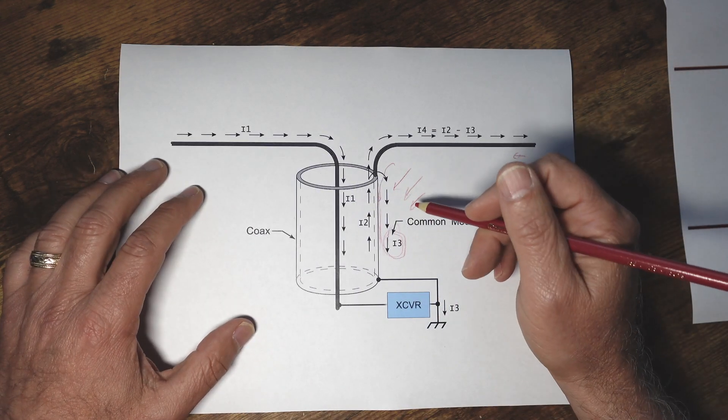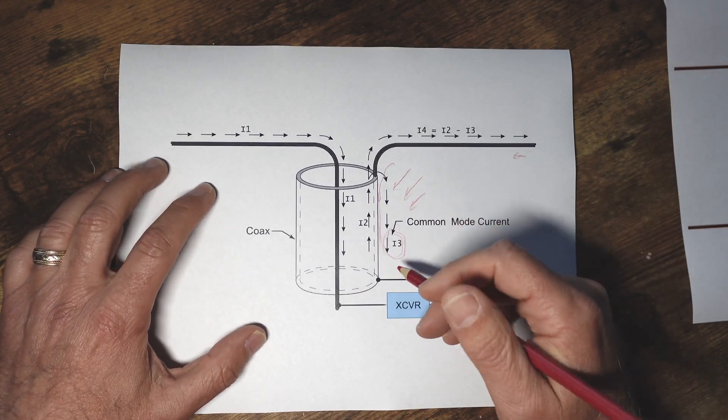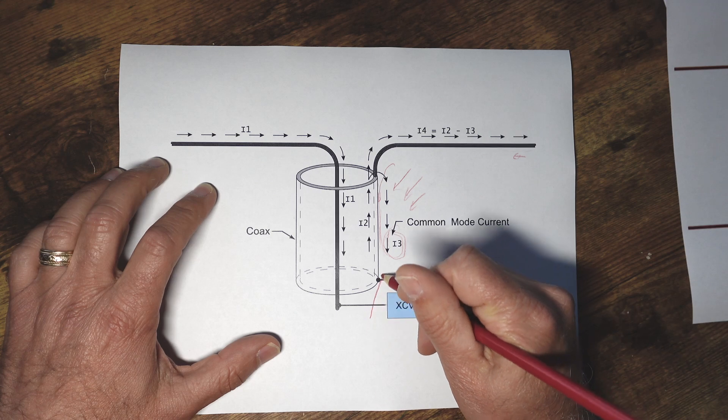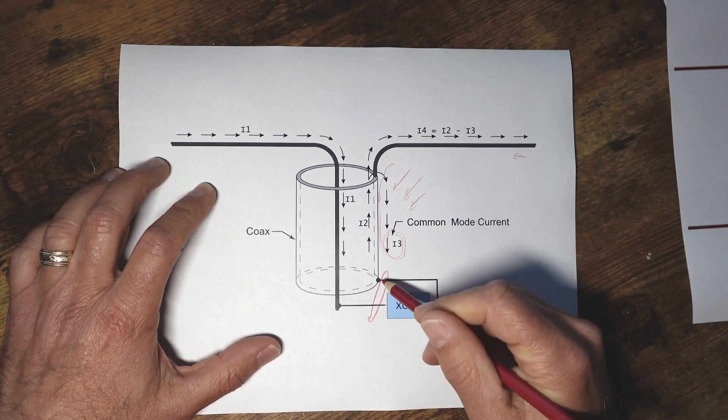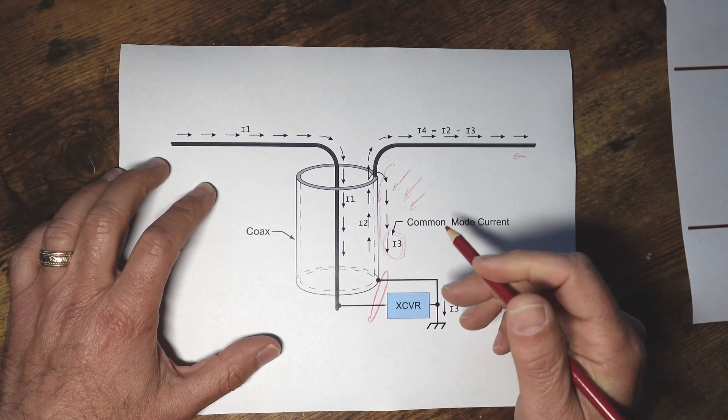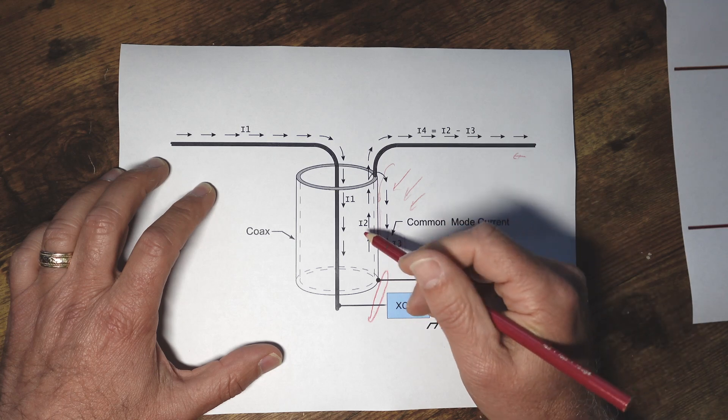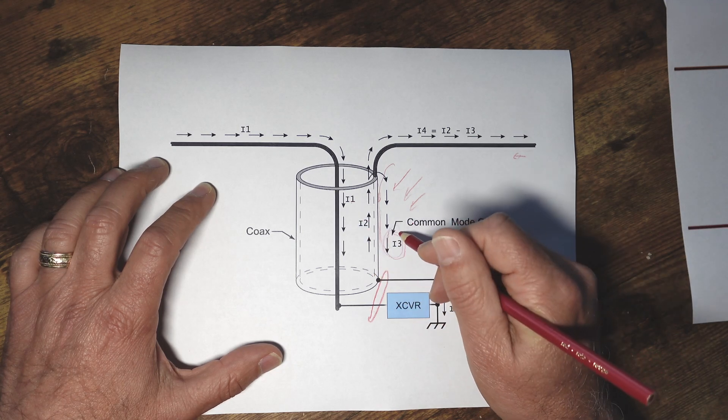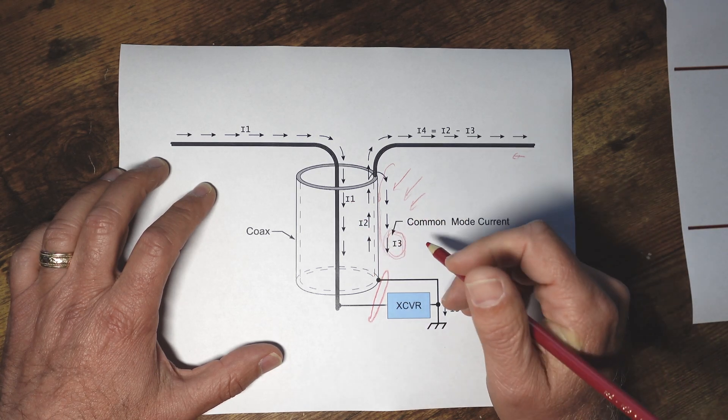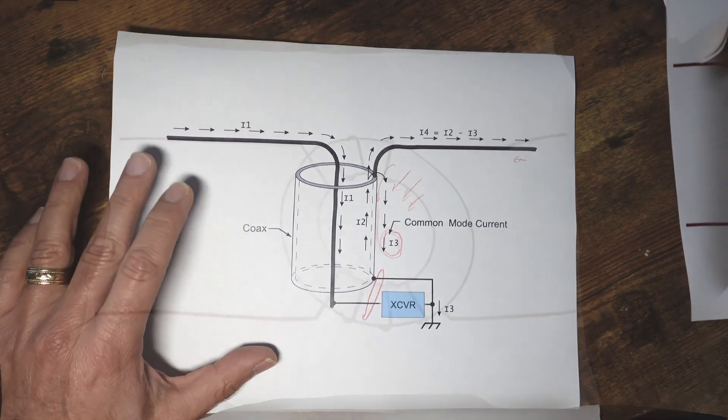So how do we solve this problem? Well one way to solve the problem is to put a common mode choke between these two and the idea of a common mode choke is to allow I1 and I2 to pass through while choking I3. So let's see how we're going to do that.